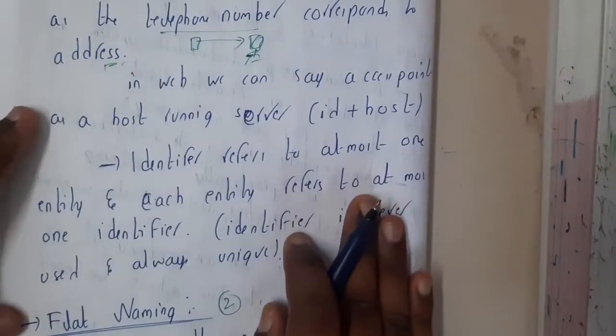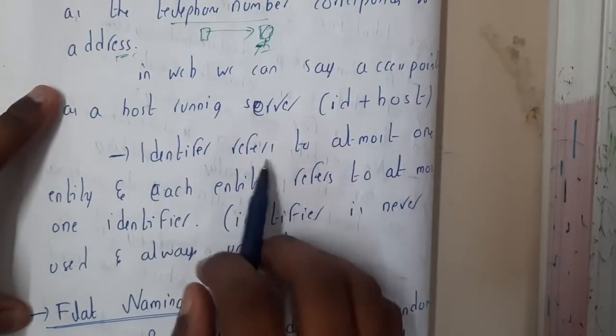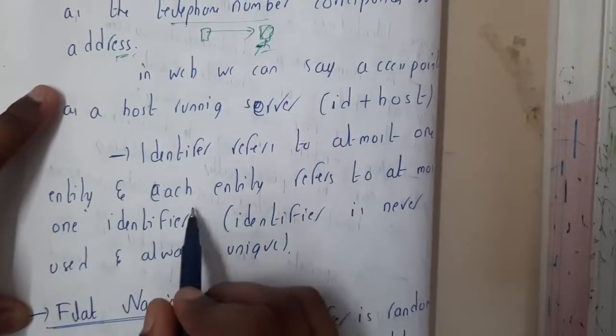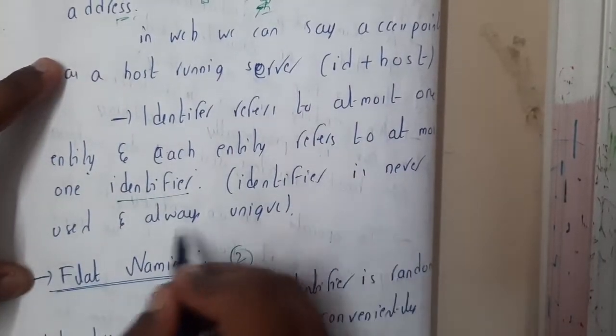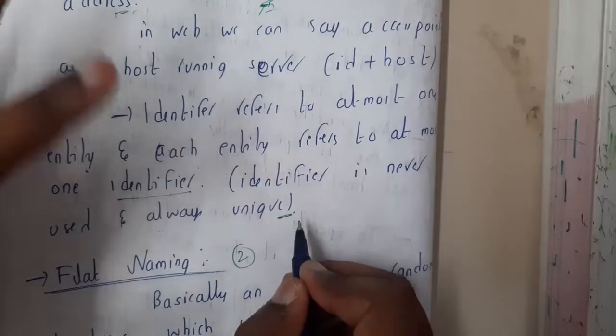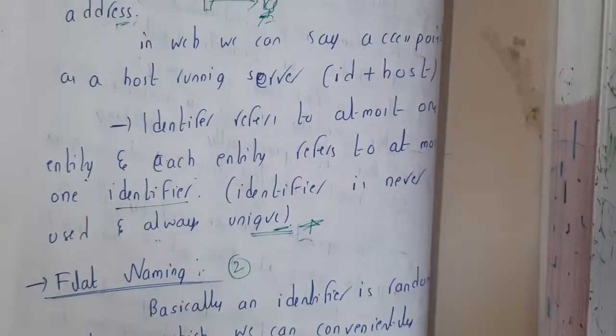Okay, so now you are left out with this identifier. So in simple words, identifier refers to a unique entity. So identifier refers to at most one entity, and each entity refers to at most one identifier. So identifier can never be reused. It is always unique.